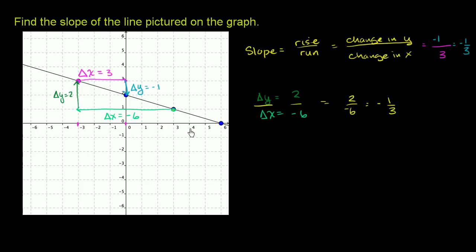You can verify it yourself: take any two points, figure out the run to get from one to the next, then the rise. For any line, the slope won't change. In our first example, we moved in the positive 3 direction — that's the run — but we went down, so our rise is negative 1. With a run of positive 3 and a rise of negative 1, our slope is negative 1 third.